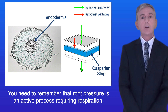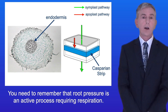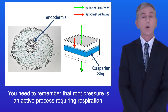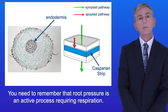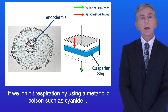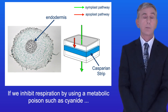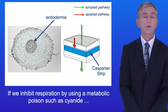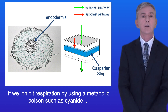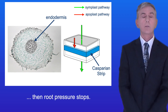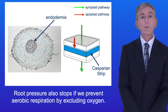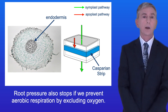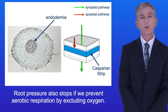Root pressure is an active process requiring respiration. If we inhibit respiration by using a metabolic poison such as cyanide, then root pressure stops. Root pressure also stops if we prevent aerobic respiration by excluding oxygen.